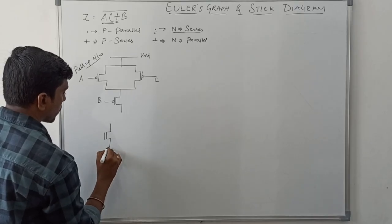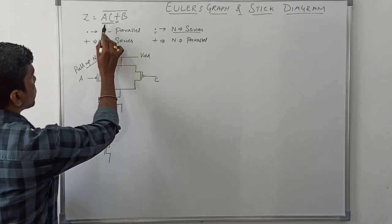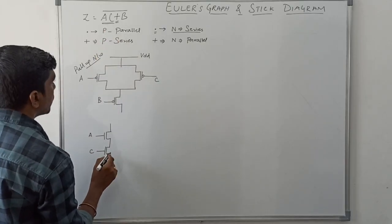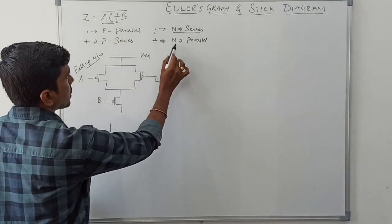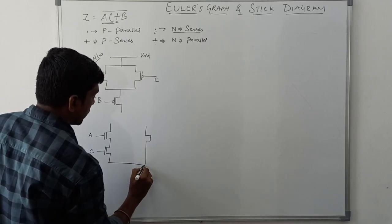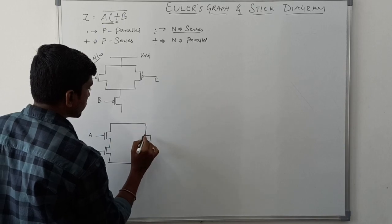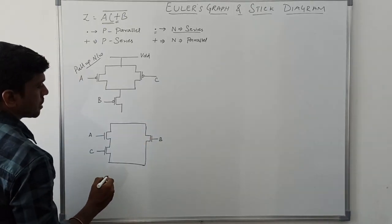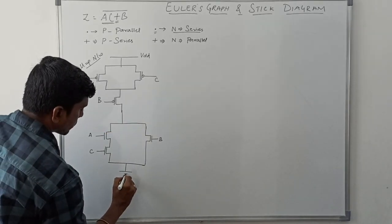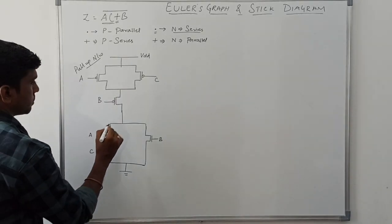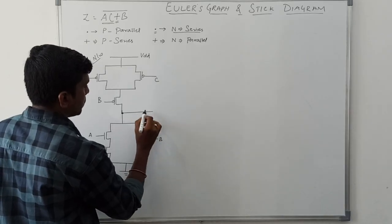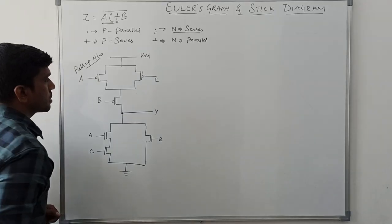These two transistors are connecting in series. The inputs of the transistors are A and C. The next operator is plus, so the NMOS transistor is connecting in parallel. The B transistor connects in parallel to A and C, with input B. The pull-up and pull-down networks are connected in series, and the pull-down network is connected to ground.